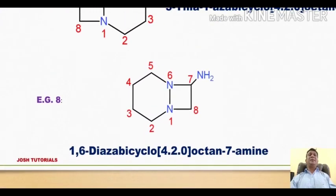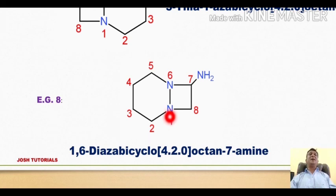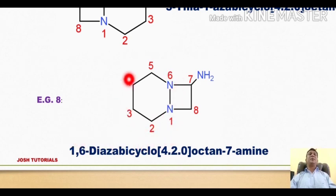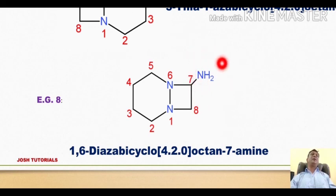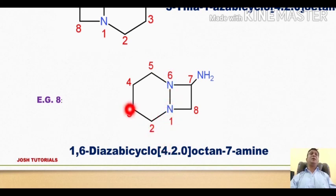Example 8: Both bridged atoms are nitrogens at positions 1 and 6, so we use '1,6-diaza'. Prefix is 'bicyclo'; total 8 atoms gives 'octane'. An amine group at position 7 gives 'octan-7-amine'. Distances between bridged atoms: 4, 2, and 0, giving bicyclo[4.2.0]. The full name is 1,6-diazabicyclo[4.2.0]octan-7-amine.